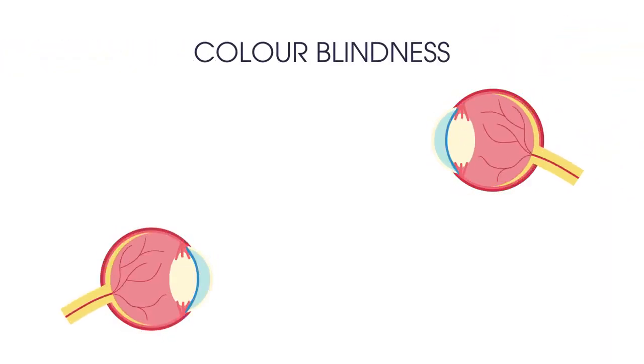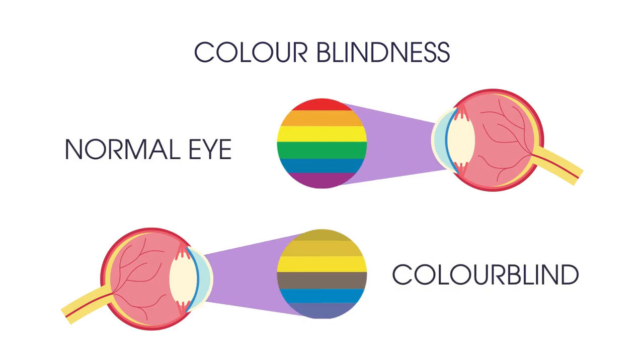Perhaps you know someone who is colour blind or maybe you are. A colour blind or colour vision deficient person cannot tell some colors apart or may only see the world in shades or tones. But why does this happen?